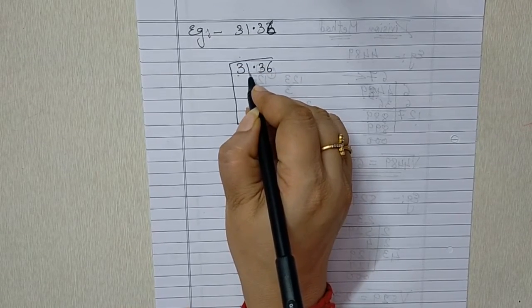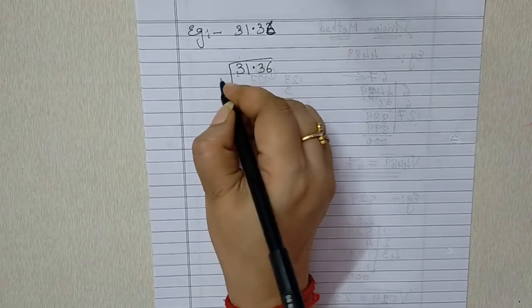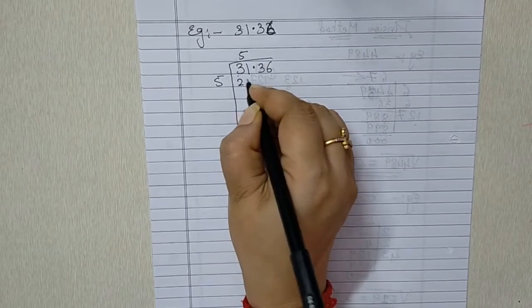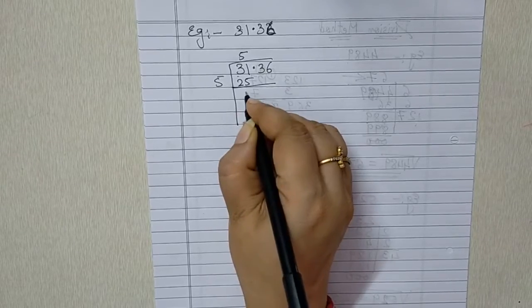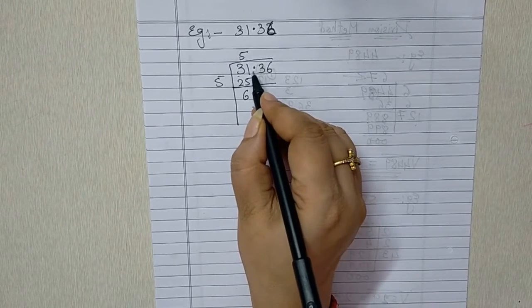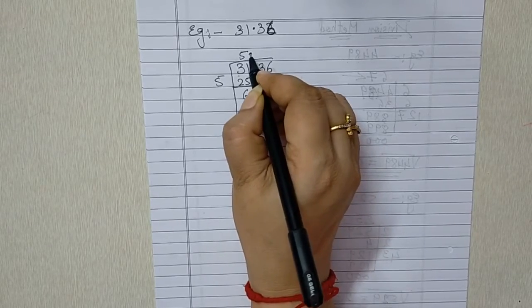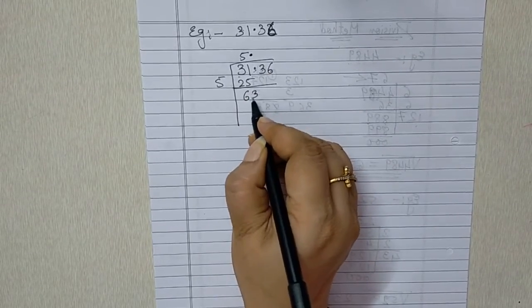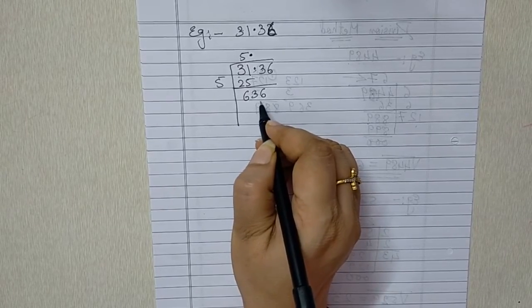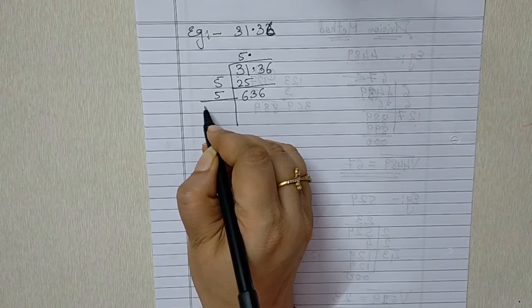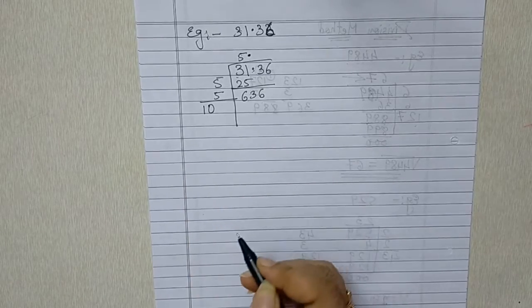Is 31 a square number? No. So we will be taking 5×5=25 which is a smaller number than it. Now we got a decimal point in our question. So we have to put it in our quotient also. And then we will be taking this 36 down. Also we will be adding this 5 on left side. We got 10.